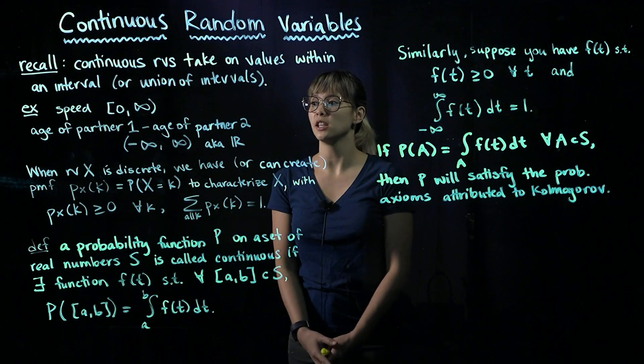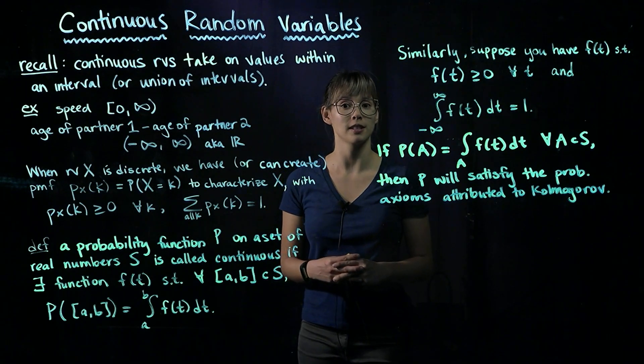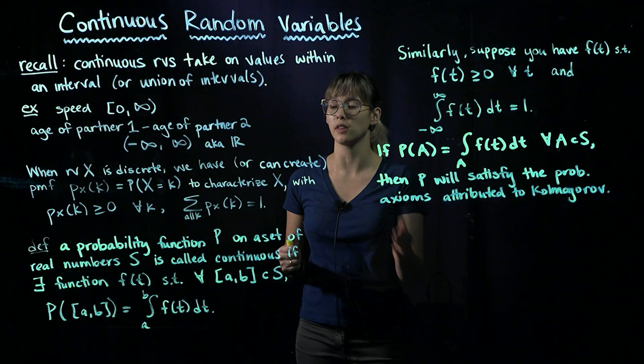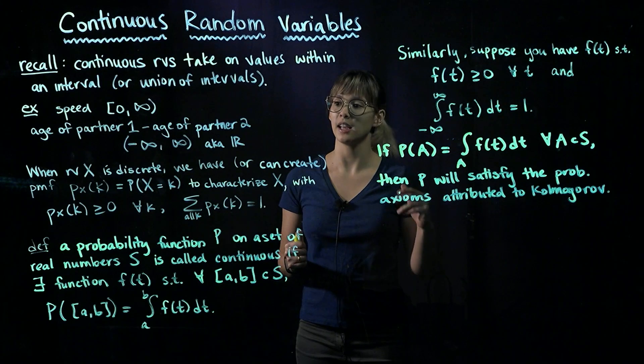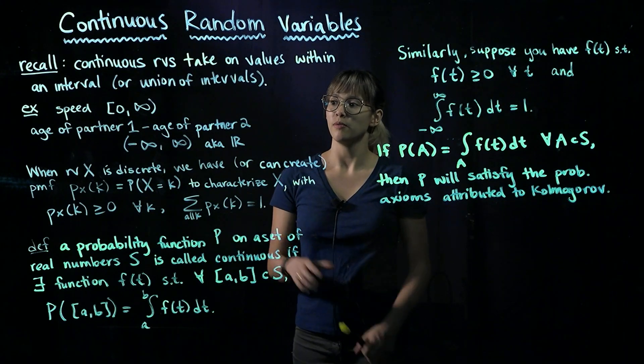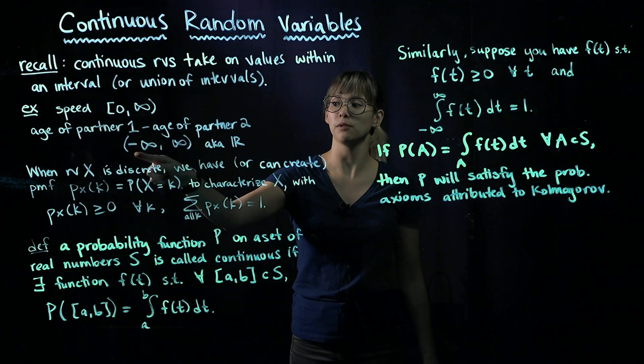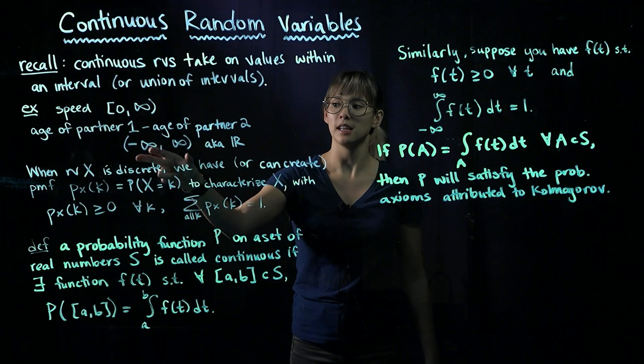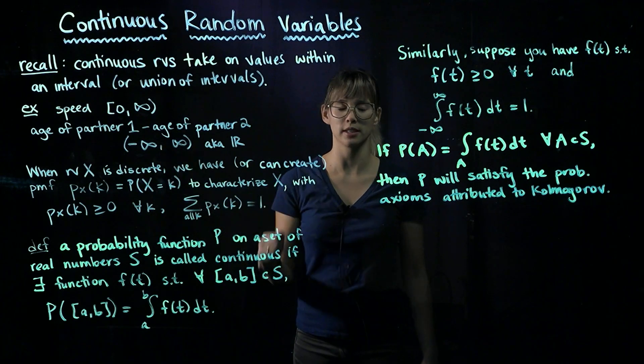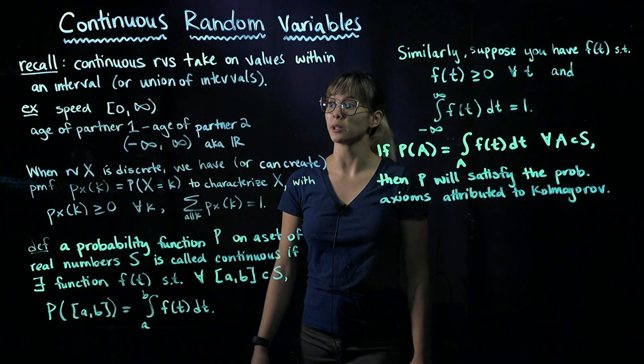Another example of a continuous random variable, we could look at the difference in the age of two partners. If we look at the age of partner one minus the age of partner two, this difference is going to be in the interval from negative infinity to positive infinity, not including those two endpoints. So this interval is called the real numbers.